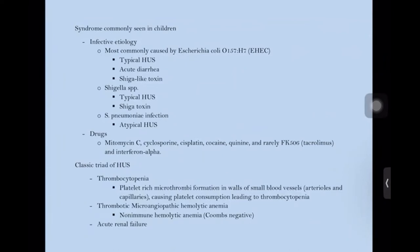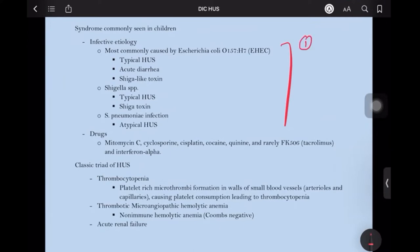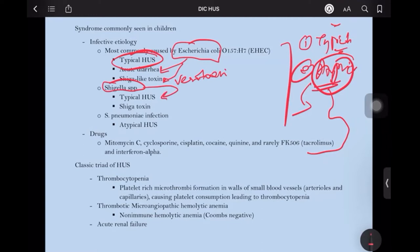HUS is pretty commonly seen in children. Infective etiology is the most common cause, and nowadays we see two types of HUS. One is typical HUS, which has a history of infection, and the second is atypical HUS. Regarding the infective etiology: E. coli O157:H7 presents with acute diarrhea, secretes Shiga-like toxin — that is virotoxin — and is classified under typical HUS. Shigella species also produce typical HUS with its own Shiga toxin.